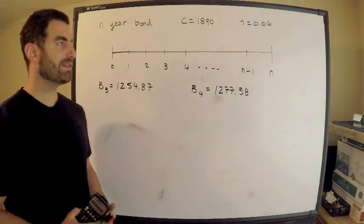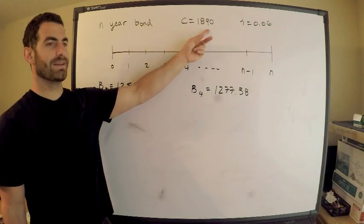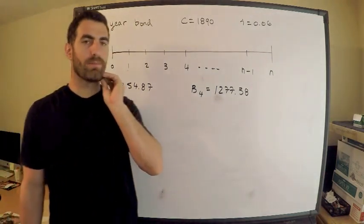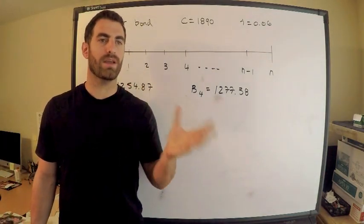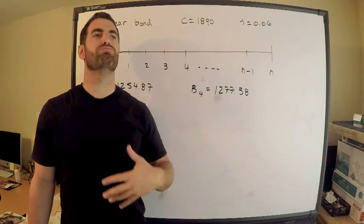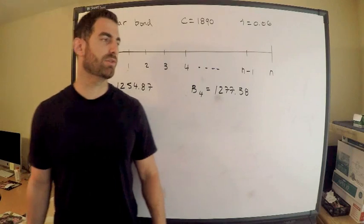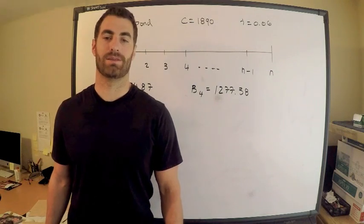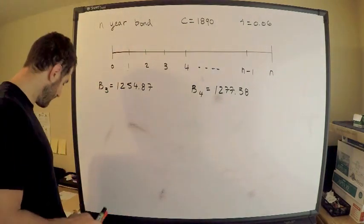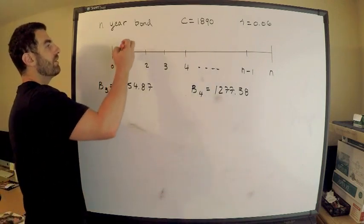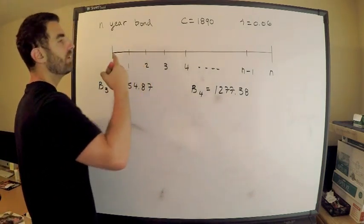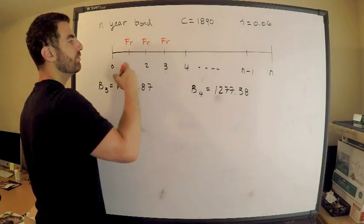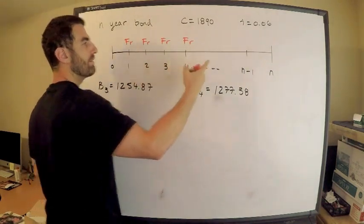We're given an n-year bond. The redemption value, denoted as C, is 1890. The effective interest rate is 0.06 annually. Coupons are paid annually — note that the coupon rate is always annual but may be paid at other intervals, so be careful. Here, both the coupon rate and payment are annual. The coupon payment is F times R, where F is the face value and R is the coupon rate.